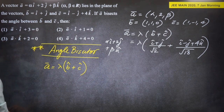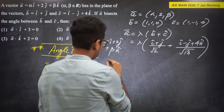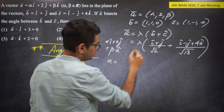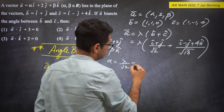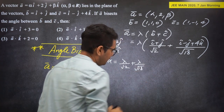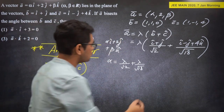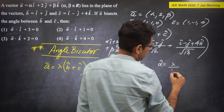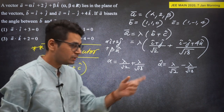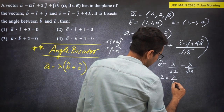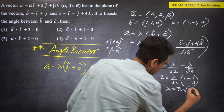So options giving alpha = -3 or -1 are cancelled. For beta, the k-component: beta = lambda * 4/√18 = (3√2 * 4)/(3√2) = 4. But this doesn't match options 3 or 4 either. This is where the plus-minus concept in angle bisectors matters.